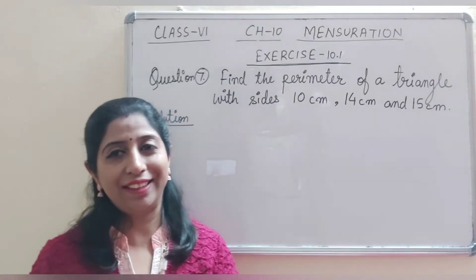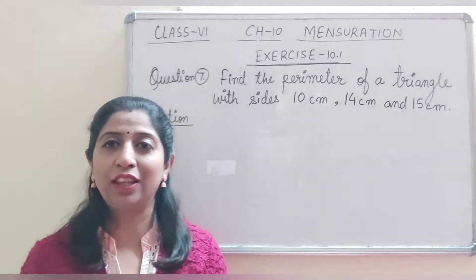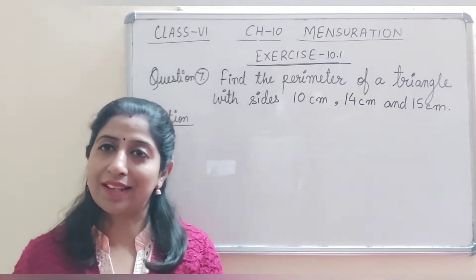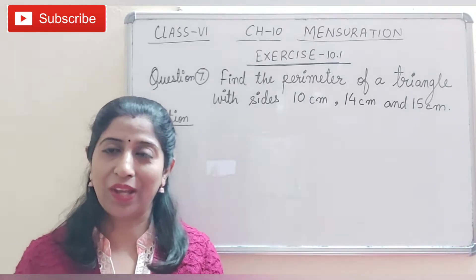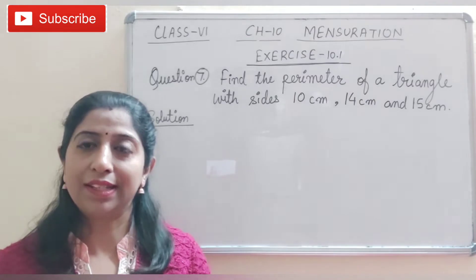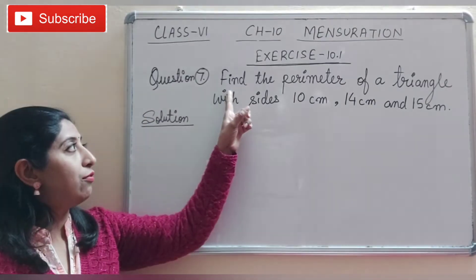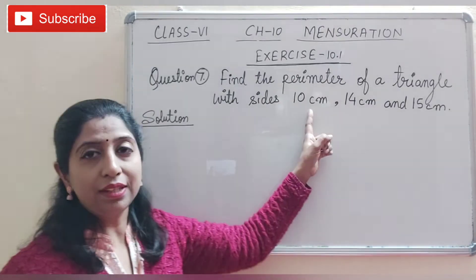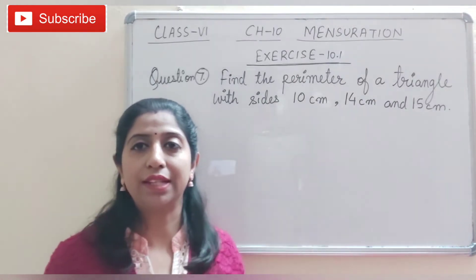Hello everyone. In this video I will solve question number 7 and 8 of exercise 10.1 class 6 chapter 10, mensuration. So let us see question number 7. Question number 7 is: find the perimeter of a triangle with sides 10 cm, 14 cm, and 15 cm.